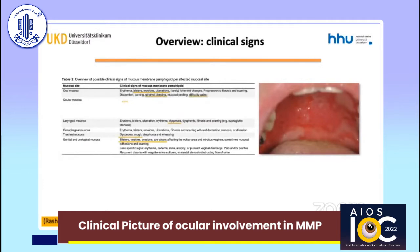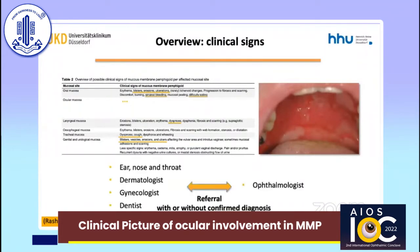Although we as ophthalmologists can also ask for symptoms affecting other locations, such as lesions in the mouth, it is important that all patients with suspected or confirmed ocular MMP need to be examined by their respective specialists. Vice versa, patients with MMP of any other location need to be seen by an ophthalmologist, because about 70% of MMP patients will develop ocular manifestations.